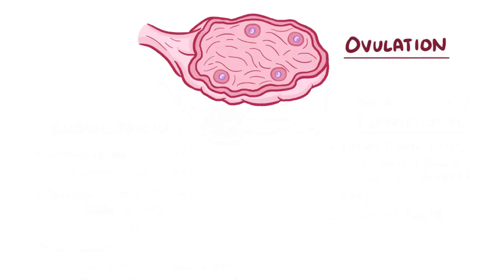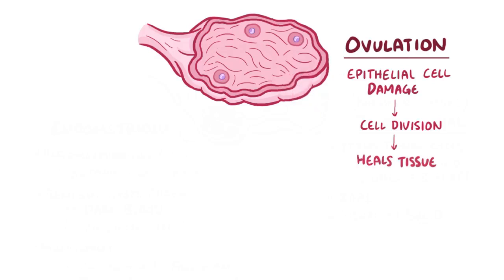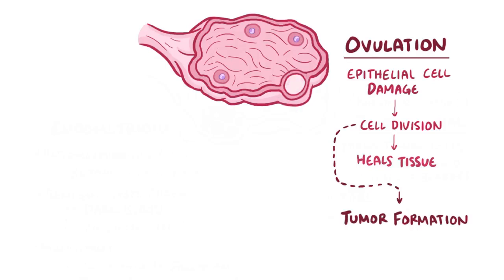During ovulation, the follicle ruptures and releases an egg, which inadvertently leads to epithelial cell damage. To fix that damage, the epithelial cells have to undergo cell division to replace and heal the tissue. Each time cells divide, there's a chance of a mutation and the possibility of tumor formation. This means that with more ovulatory cycles, there's an increased risk of tumor formation.